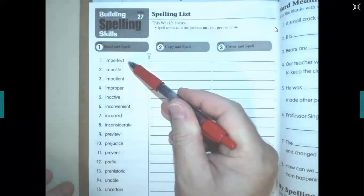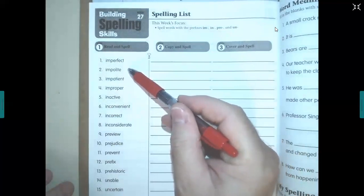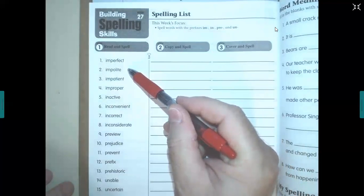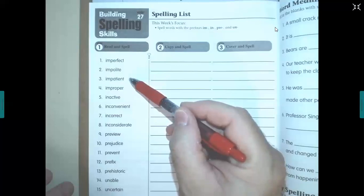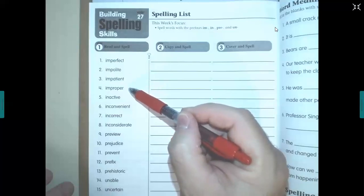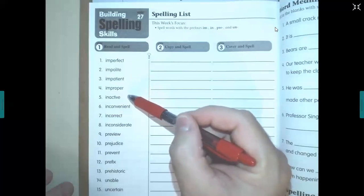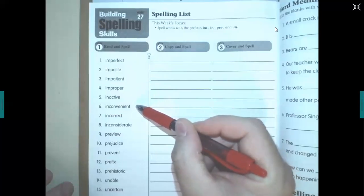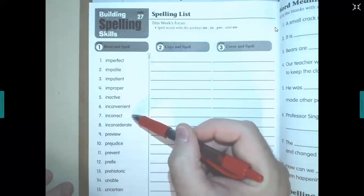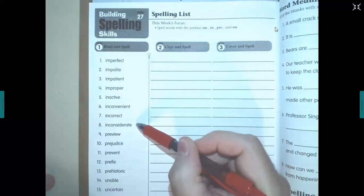So we have imperfect, impolite, impatient, improper, inactive, inconvenient, incorrect, inconsiderate.